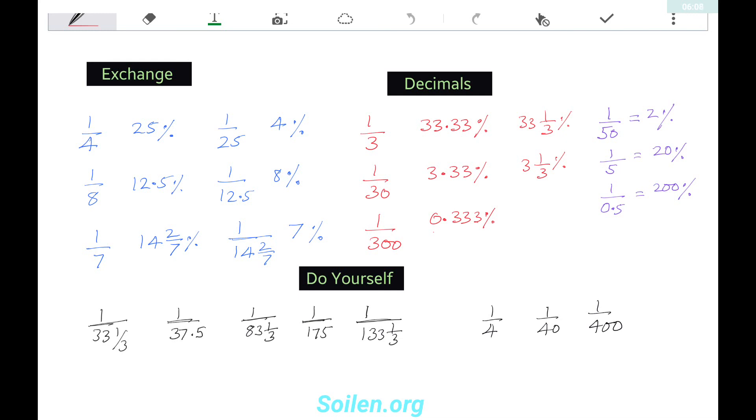Now, if we exchange numbers, we can learn even more percentages. For example, we know 1/4 is 25 percent. If we exchange both these numbers, we can remember easily that 1/25 is 4 percent. Again, if 1/8 is 12.5 percent, then 1 upon 12.5 is 8 percent. In the same way, if 1/7 is 14 and 2/7 percent, then 1 upon 14 and 2/7 is 7 percent.